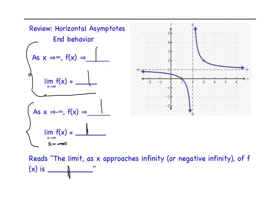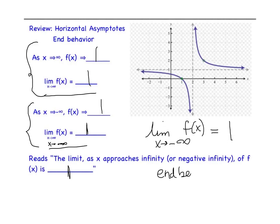What we're getting used to is this notation: the limit as x approaches negative infinity of my function — and I could substitute the actual function in — is 1. This is describing the end behavior, or the behavior at the horizontal asymptote.